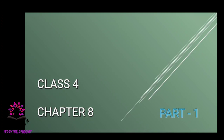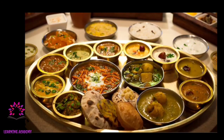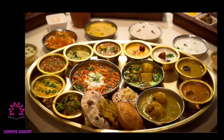Hello children, in today's class let us study about the food and health chapter for environmental science. This is a tali of food items — see the delicious variety! The tali contains different dishes made up of vegetables and various cereals and grains, including rice.